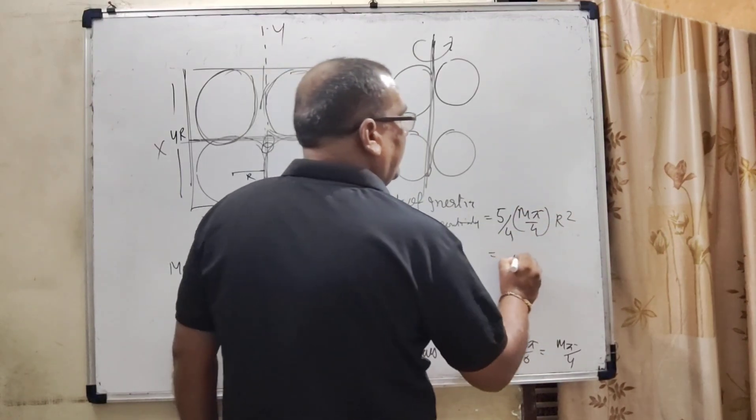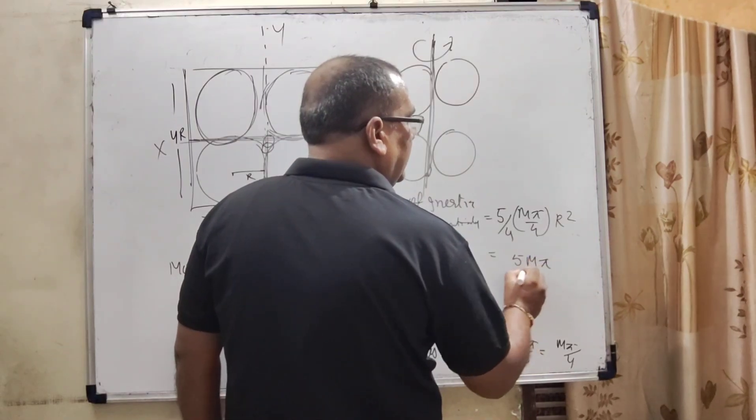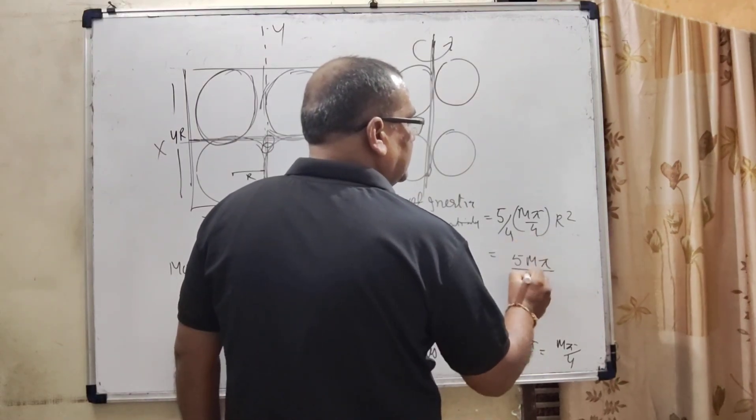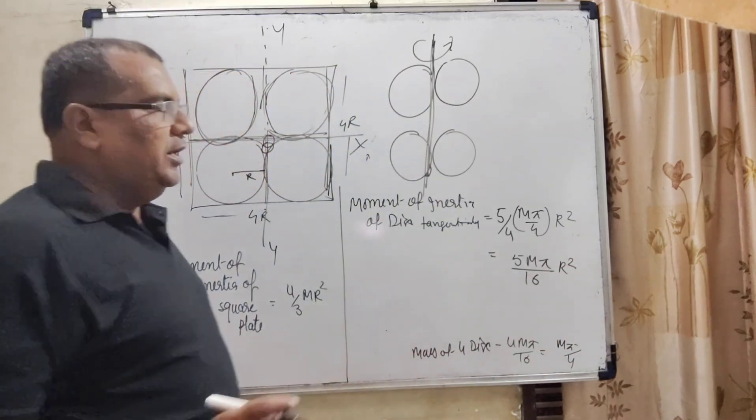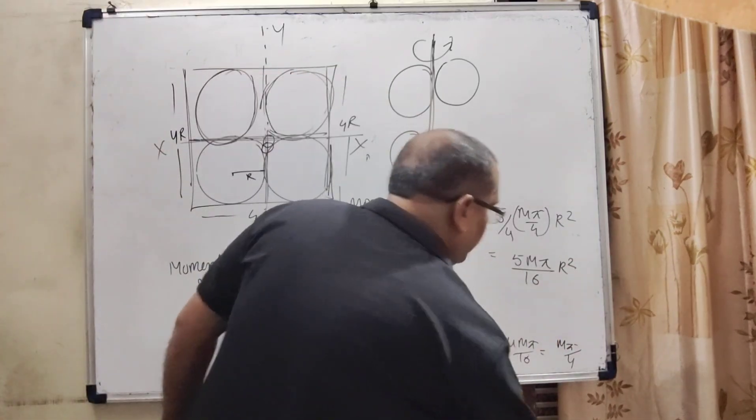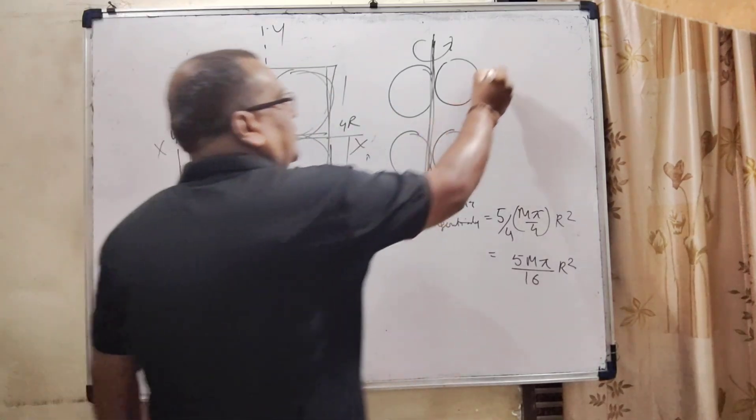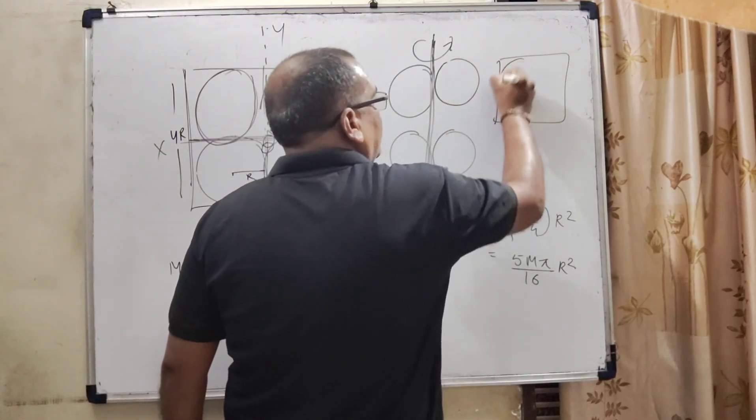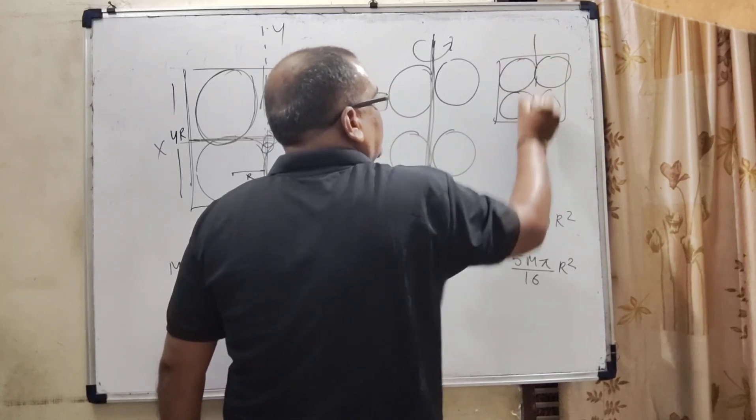Here 5 M pi, 4 times 4 is 16, R square. We have the moment of inertia of the disc, and then moment of inertia of the total system with these 4 discs taken out about this Y axis.